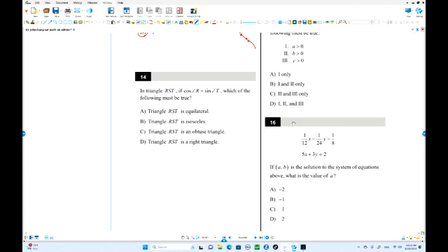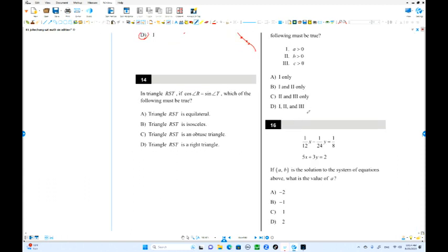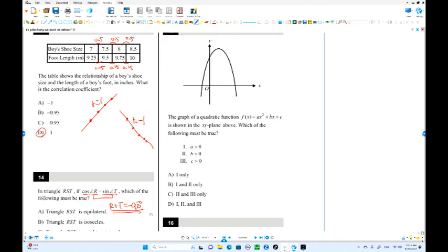Number 14. Triangle RST. Angle R, cosine of angle R equals sine of angle T. What that means? Sine and cosine equal, so R plus T must equal 90 degrees. But the other angle is also 90. This is a right triangle. Sum of these two angles is 90, the other angle is the right angle.